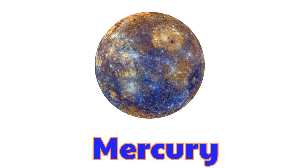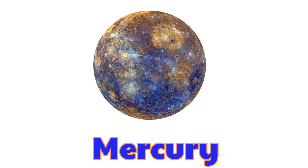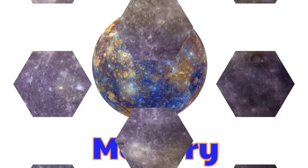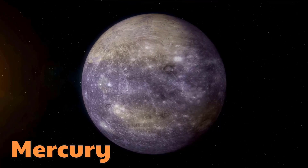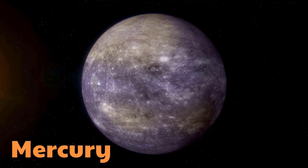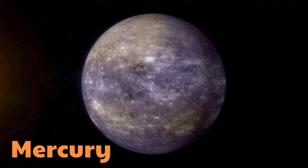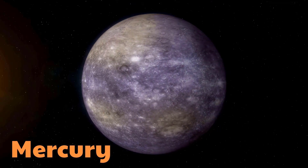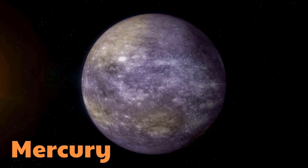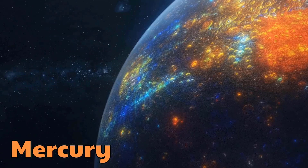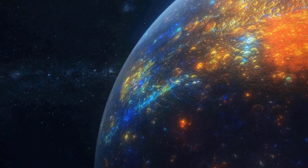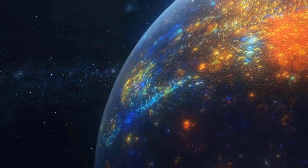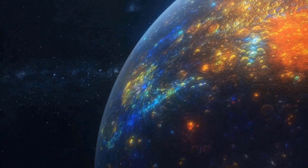Mercury. This is Mercury. Mercury is the smallest planet and the closest one to the sun. It has very hot days, freezing nights, and no atmosphere to protect it.